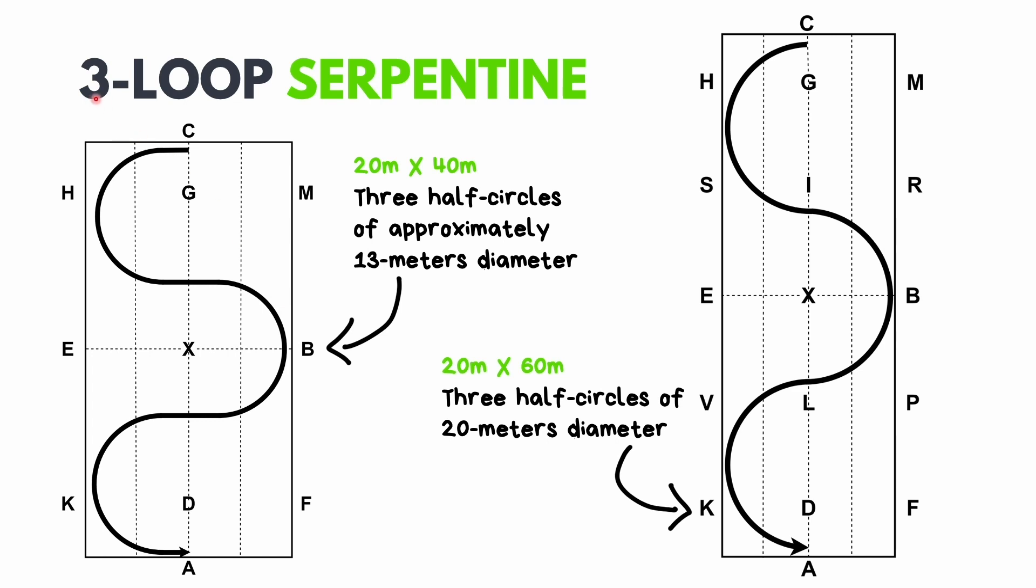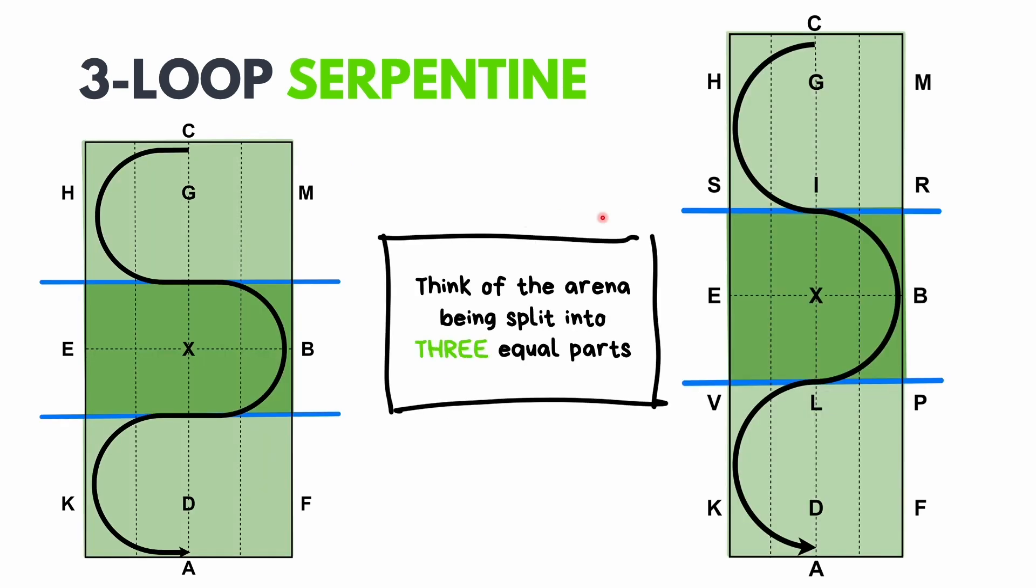If you're riding a three loop serpentine, whether in a 20 by 40 or 20 by 60, an easy way to visualize it is to think of the arena being split into three equal parts. Each time you ride a loop and cross the center line, imagine that you are dividing the arena up.